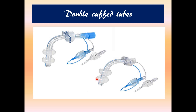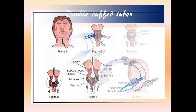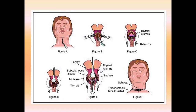Double-cuffed tubes are also available, where the two cuffs can be alternately inflated so that pressure is not applied to one particular area of the trachea continuously. You can inflate the upper cuff first, then deflate it and inflate the second one.